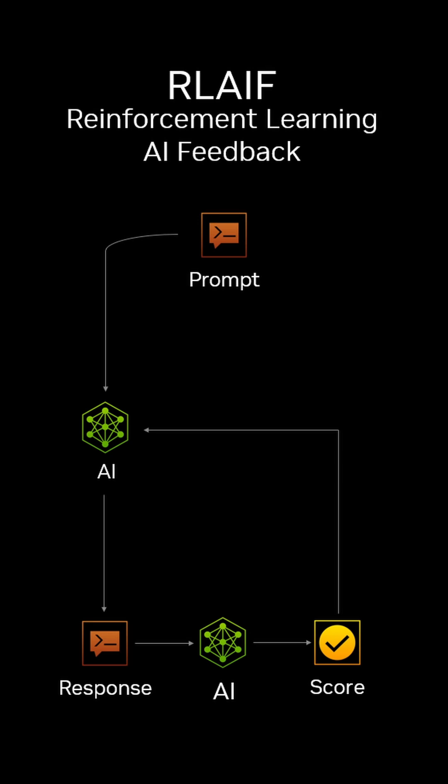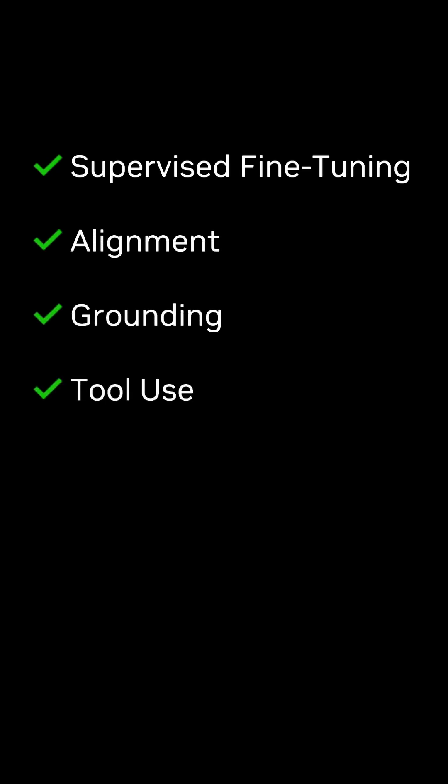The model gets to try many different paths, and as it's trying these paths, it's given a reward for improving and giving answers that humans prefer. Other post-training techniques include supervised fine-tuning, alignment, grounding, tool use and API calling. Each of these techniques helps the LLM learn new skills.